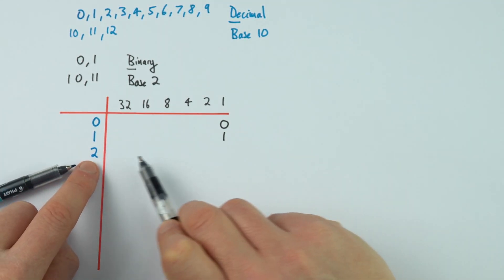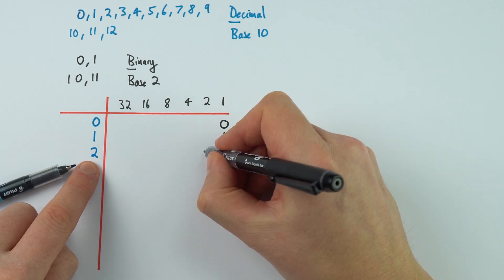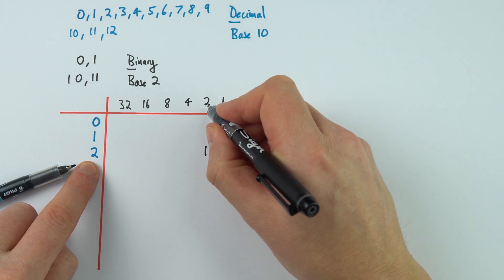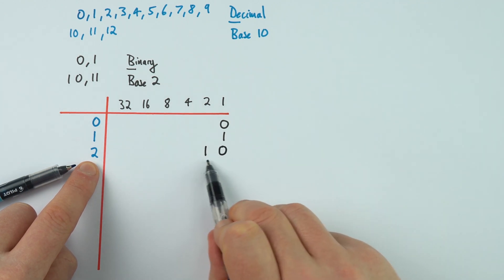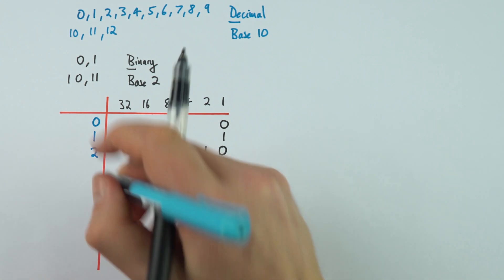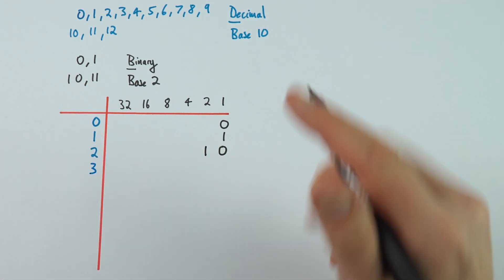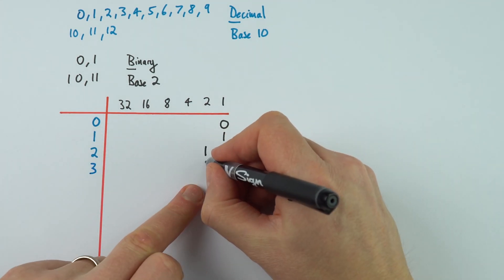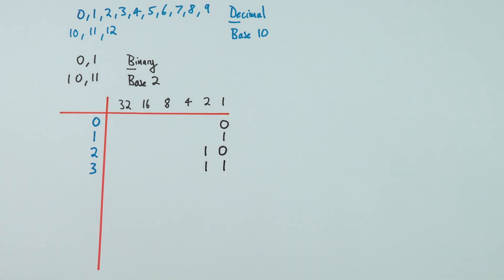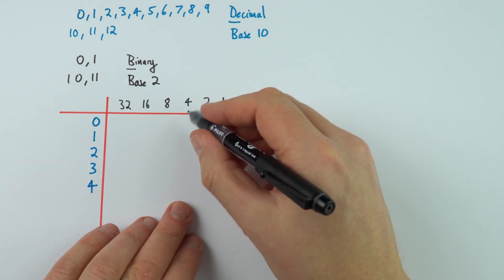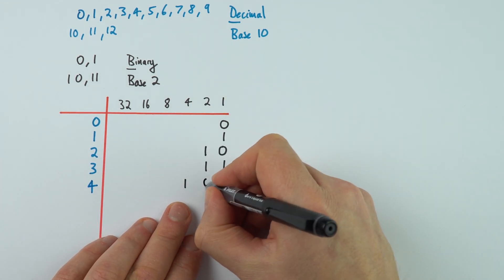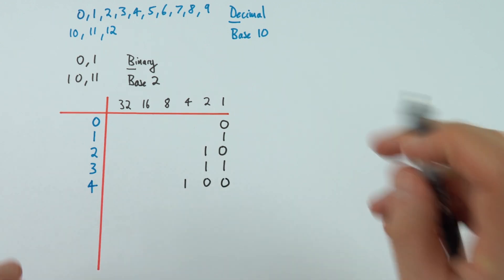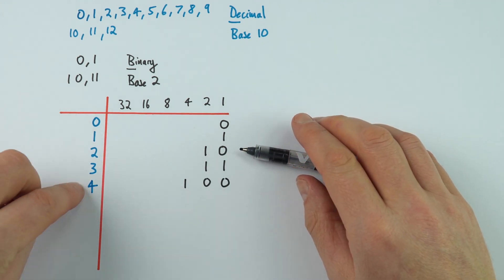Therefore we've got to go to the next column, and the number 2 is equal to this number 2 here. So it's 1 two and 0 ones. So this is how we represent the decimal number 2 in binary. The number 3 is made out of a 2 and a 1, so 11. The number 4 can't be represented with just 1s and 2s, and therefore I'm going to put a 1 in this column, because it's made out of a number 4 and no 2s and no 1s. And I'm just going to continue this for the next few numbers.